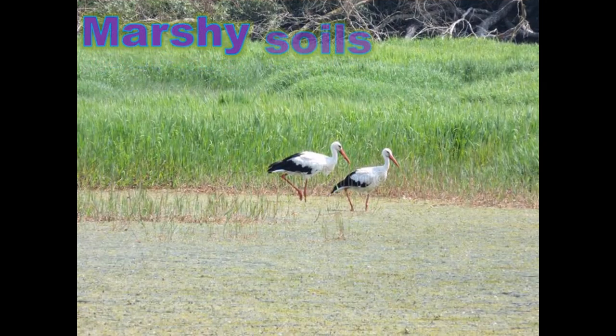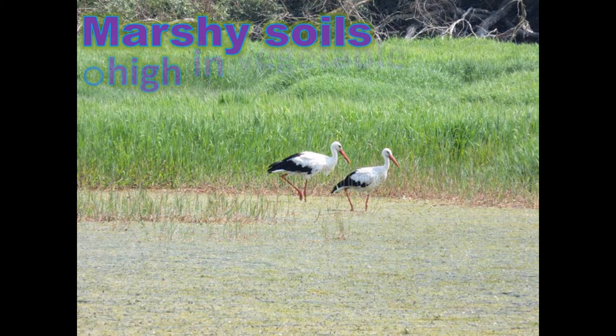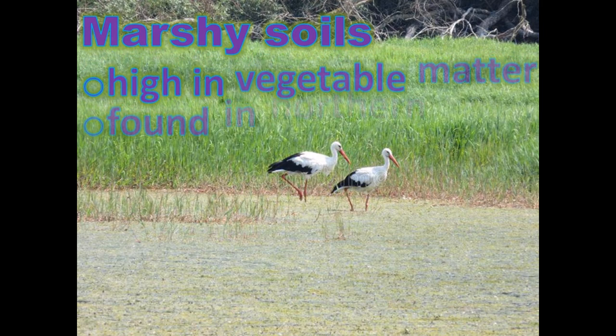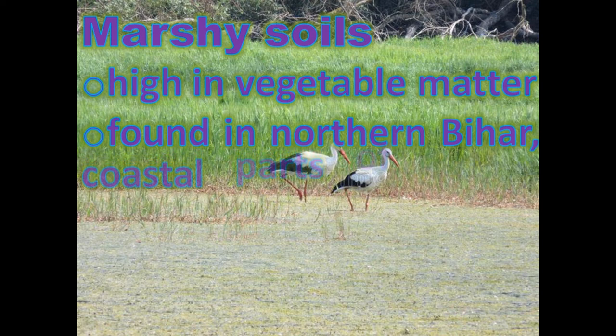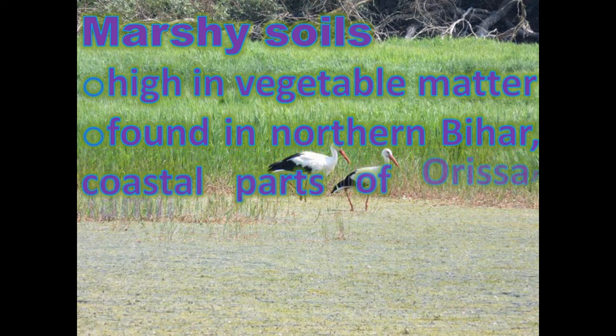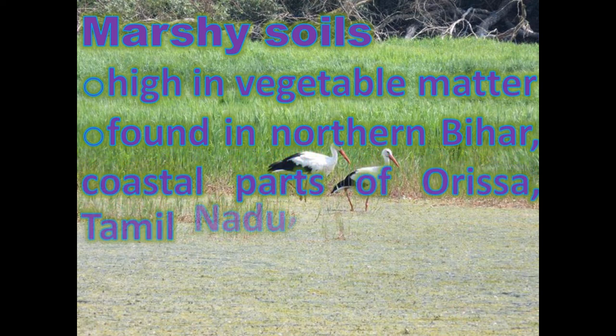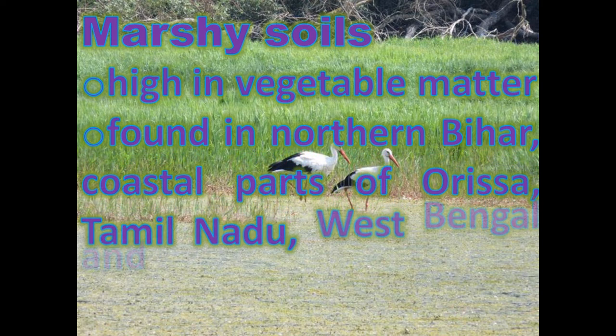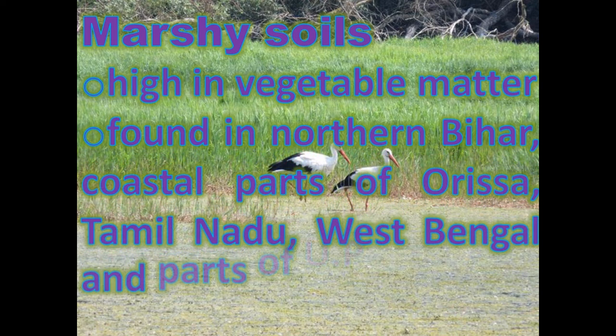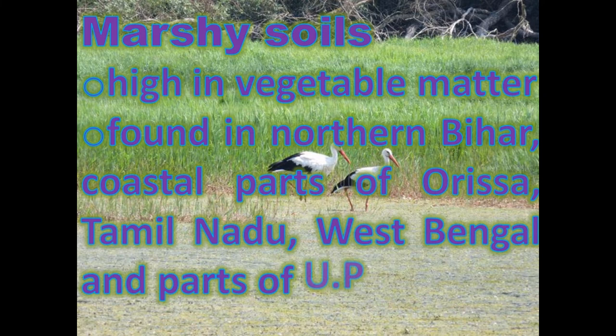Marsh soils are high in vegetable matter, found in Nadiran Bihar, coastal parts of Odisha, Tamil Nadu, West Bengal, and parts of Uttar Pradesh.